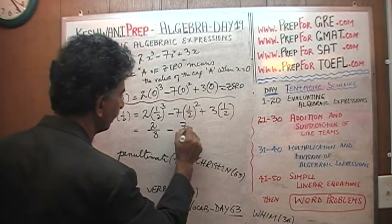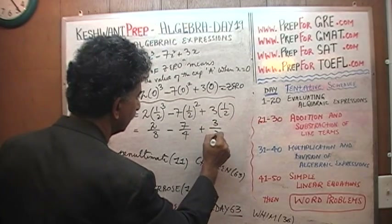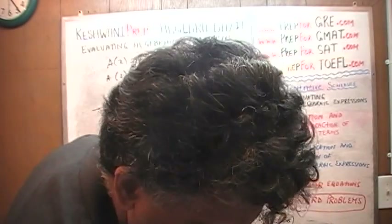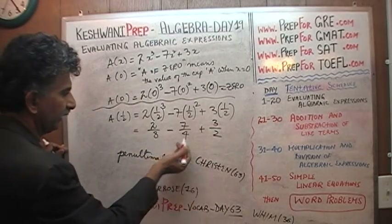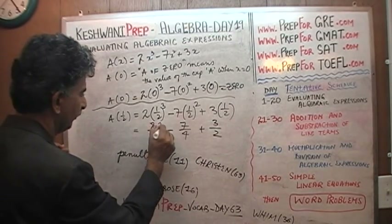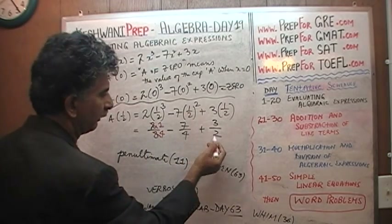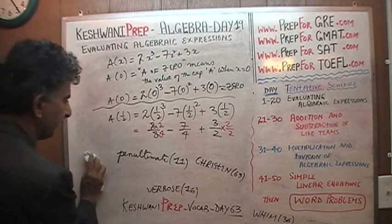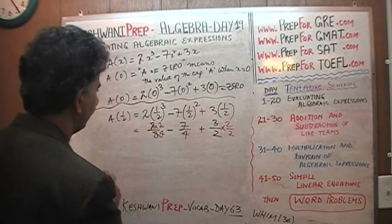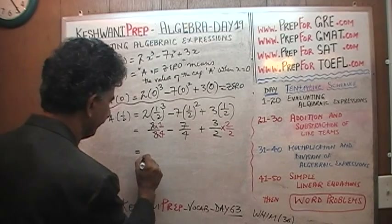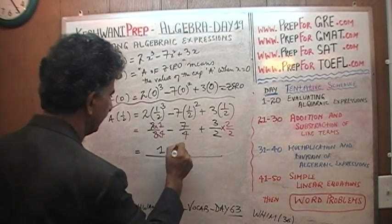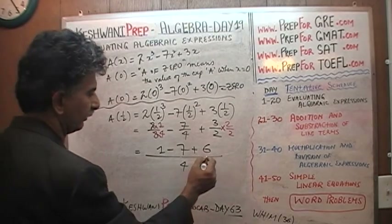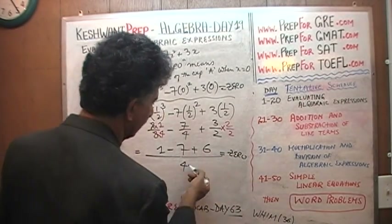(1/2)³ is 1/8, so this is 2/8. Then minus 7 over (1/2)² which is 4, so minus 7/4. Plus 3 times 1/2, which is 3/2. Instead of leaving 2/8, let's simplify it to 1/4. Now the denominator is 4 for everything. Multiply 3/2 top and bottom by 2 to get 6/4. So we have (1 minus 7 plus 6) over 4, which is 0 over 4.